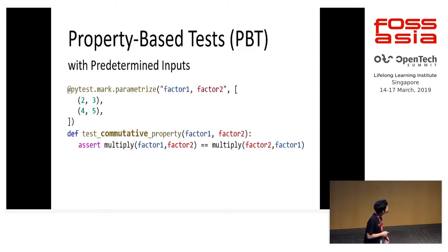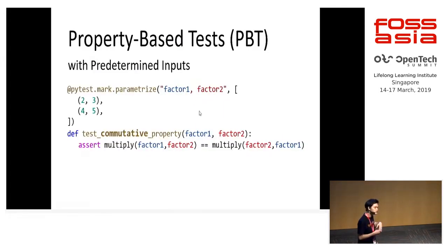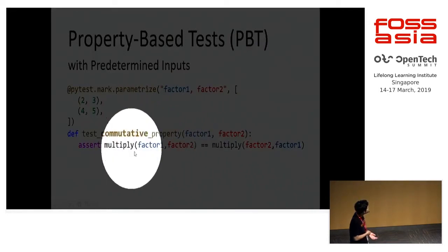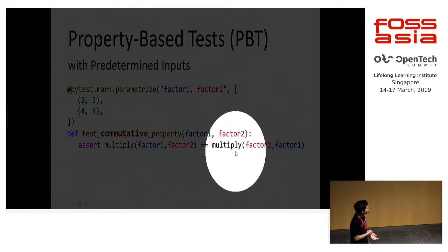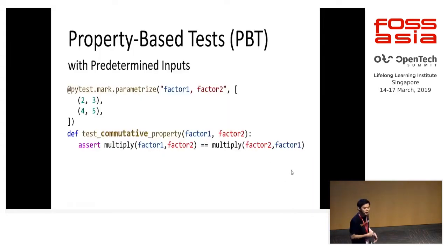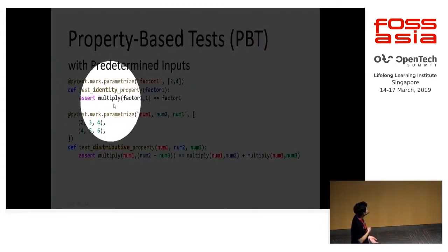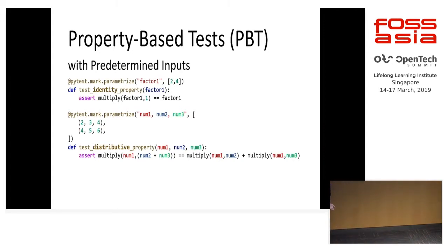If you notice here, we got rid of the output now. We're just going to depend on the input data that we have. But using this input data and our knowledge about properties, that's how we're going to improve our approach to testing. We can do the commutative property in this fashion — we just rearrange the inputs and, using the same function that we're testing, it should give the same result. That's the property we're trying to test. We are now using property-based testing, but without any framework yet.